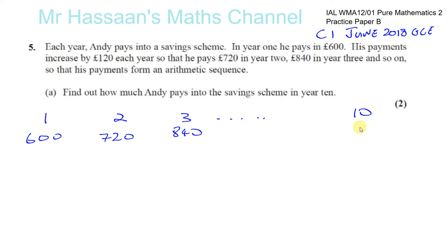Part (a): We want to find how much he pays in year ten. That's basically finding what the tenth term is, U₁₀. We know the general term is Un = a + (n-1)d.